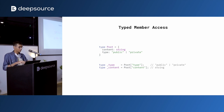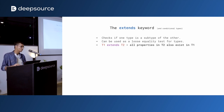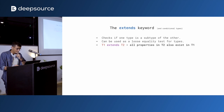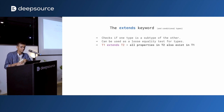All of this is happening at compile time, not runtime. There's another feature called the extends keyword. It's often used with conditional type expressions, and it checks if one type is a subset of the other — it can be used as a loose equality test. When you say T1 extends T2, you're checking if all properties in T2 also exist in T1.